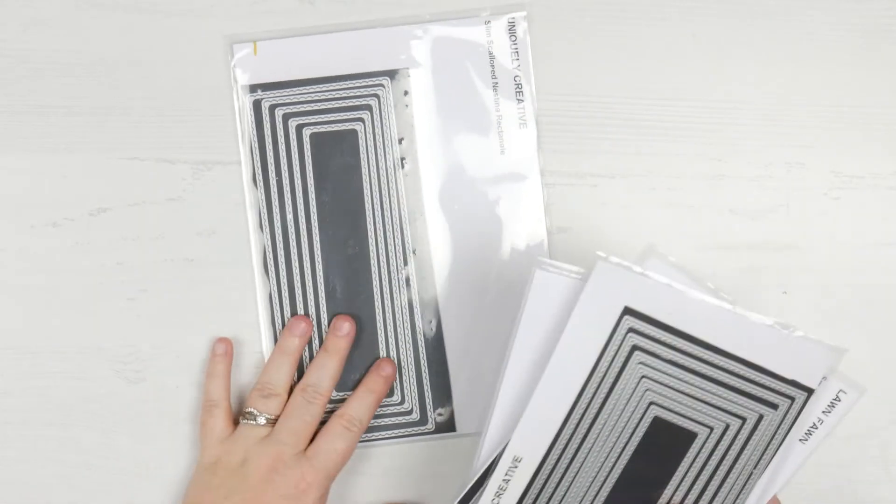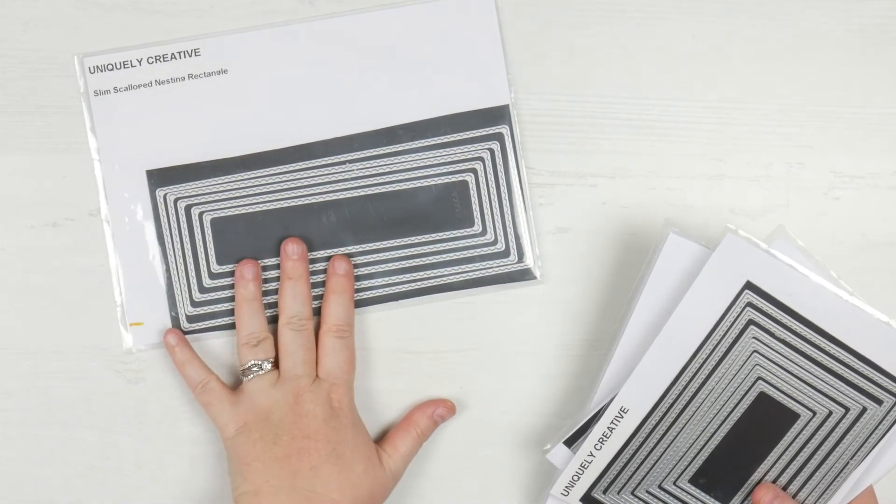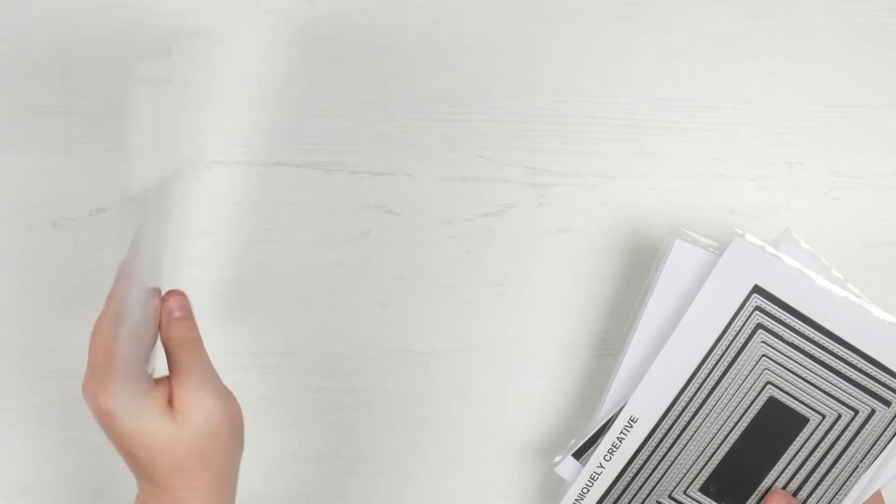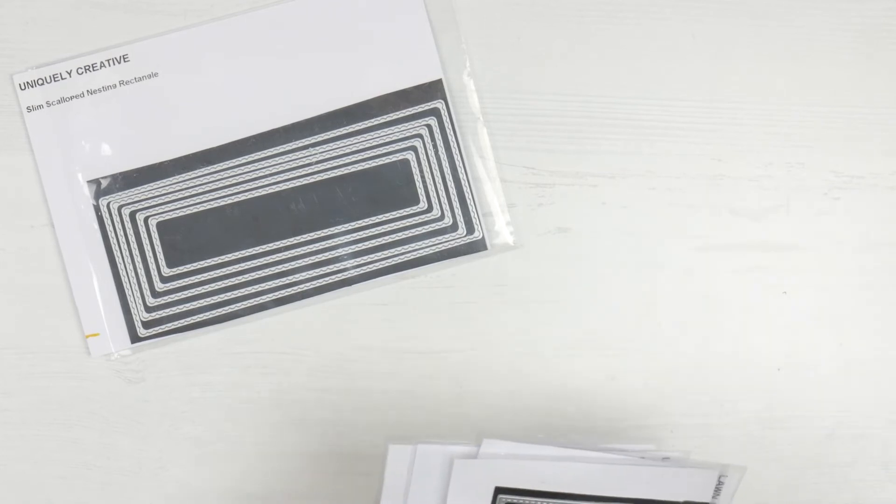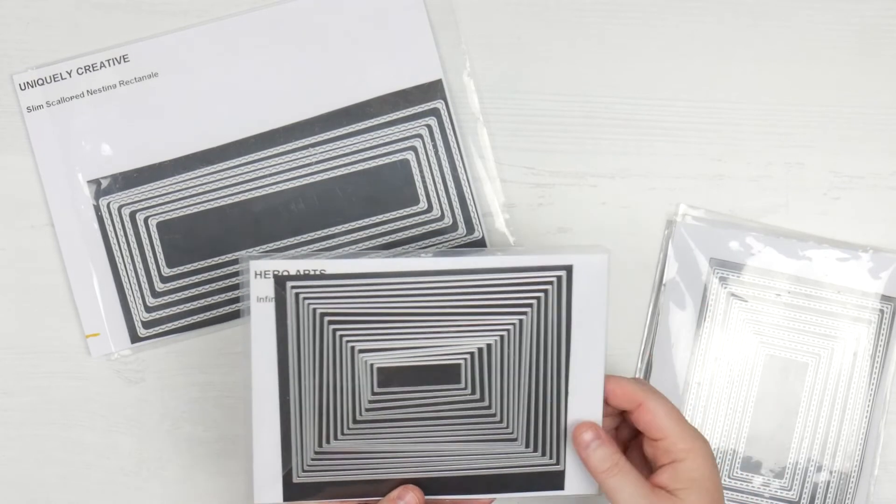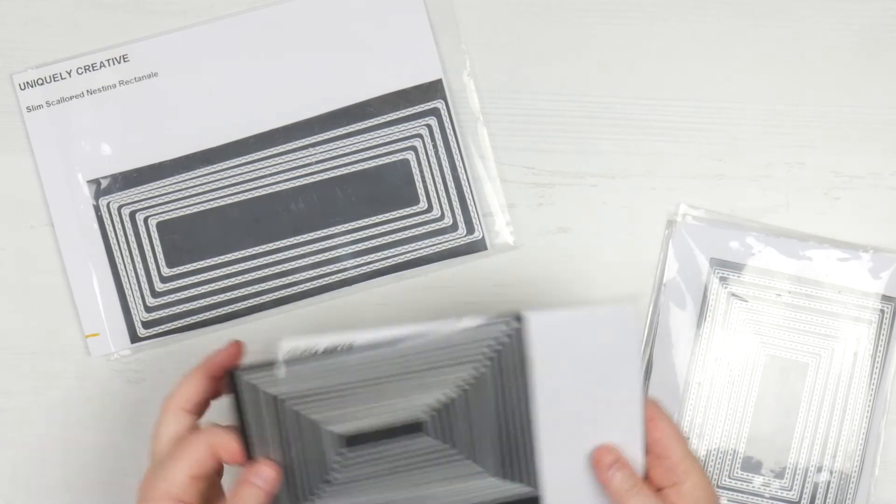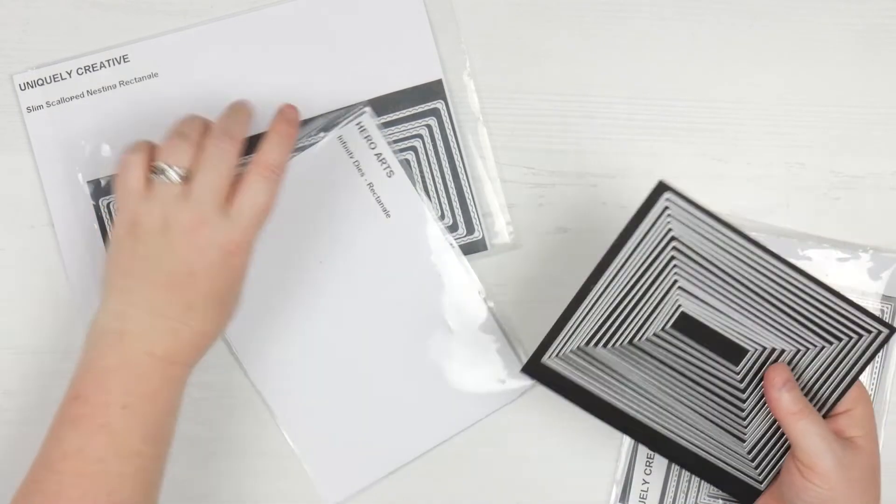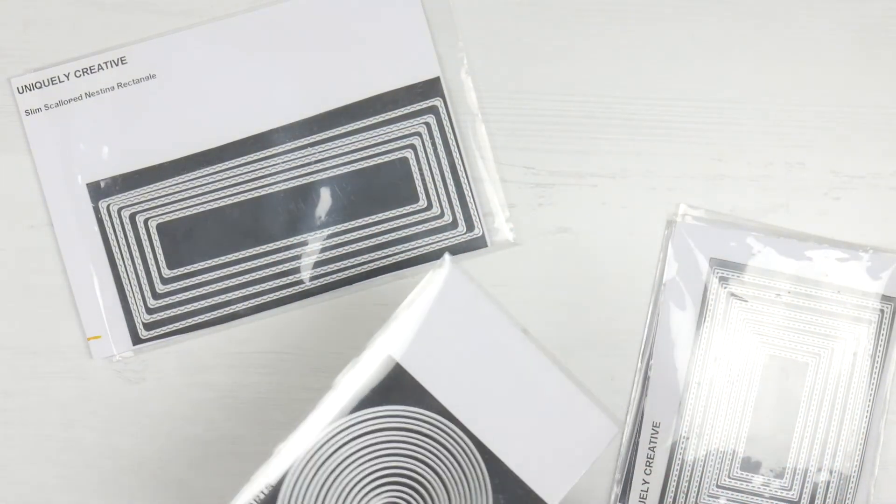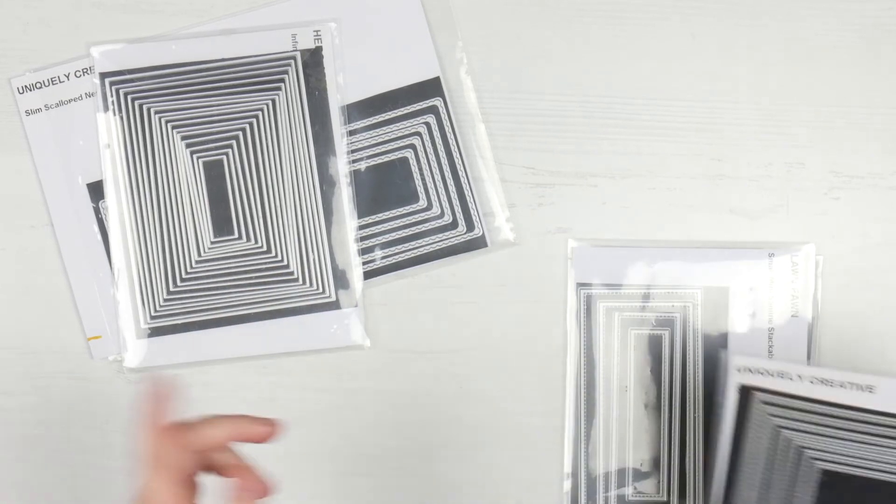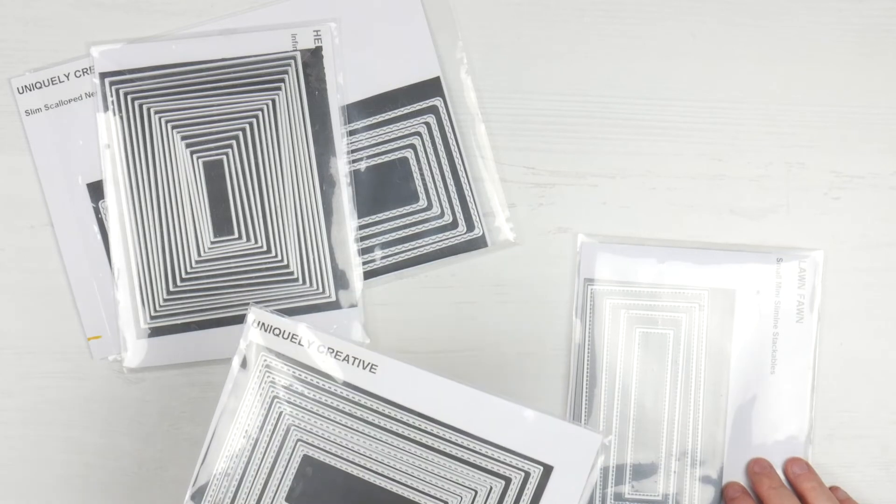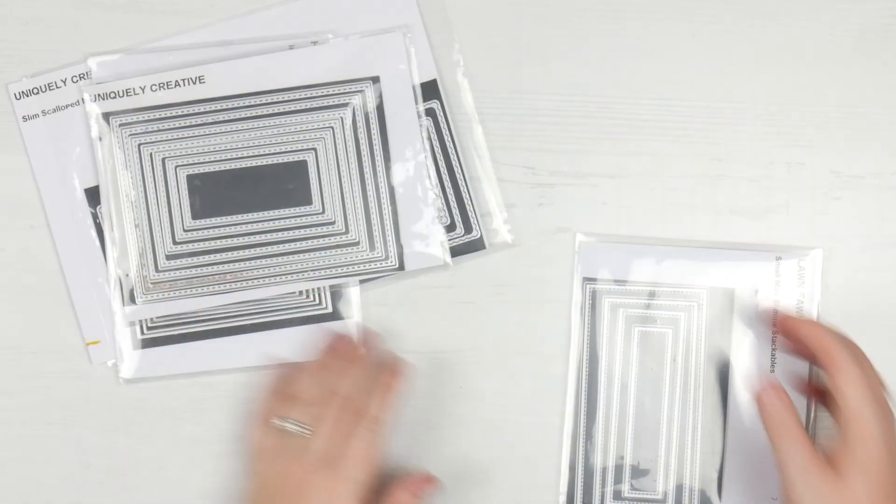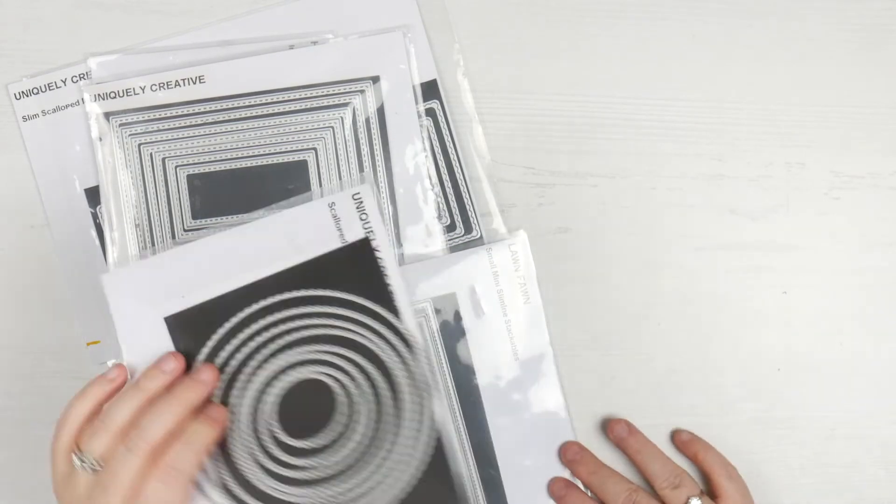These are my essentials dies. These are the shapes that I use, not on every card, but that I reach for all the time. I've got my slim line ones from Uniquely Creative, my slim scalloped and my slim stitched. I love a stitched edge and I will use a stitched edge more often than not. And if you don't, that's where something like this one, these are the Hero Arts Infinity dies. I love these rectangles, they're awesome.